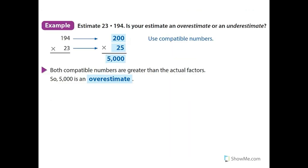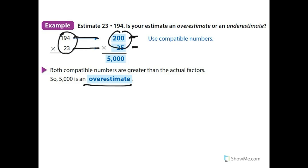Then we estimate 23 times 194 and find out if our estimate is an overestimate or underestimate. Here they're using compatible numbers — numbers that are close to the actual numbers and easy to use. They're going to use 200 for 194 and 25 for 23. Both compatible numbers are greater than the actual factors, so 5,000 is an overestimate.